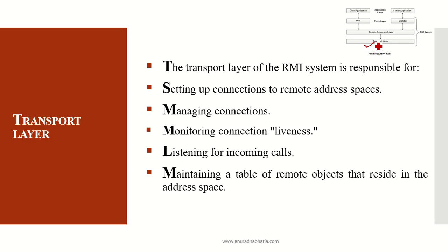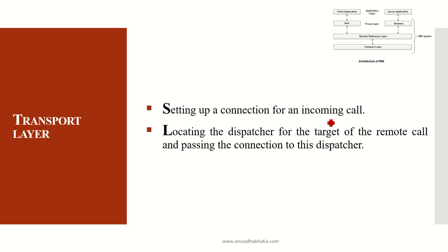The transport layer is the last layer of RMI. It is responsible for setting up connections to remote address spaces, managing all connections, monitoring connection liveness, and listening for all incoming calls. It manages a table of remote objects that reside in its address space. Setting up connections for all incoming calls is the most important part. It locates the dispatcher for the target of the remote call and passes the connection to this dispatcher, which then dispatches the functions and protocols to the skeleton.